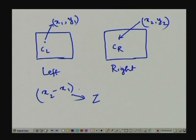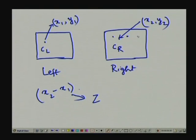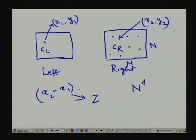Regarding the complexity of the correspondence search: for images of size n×n, a naive search for the right-image match of every left-image point requires O(n^4) operations in the worst case. This is a massive computation.